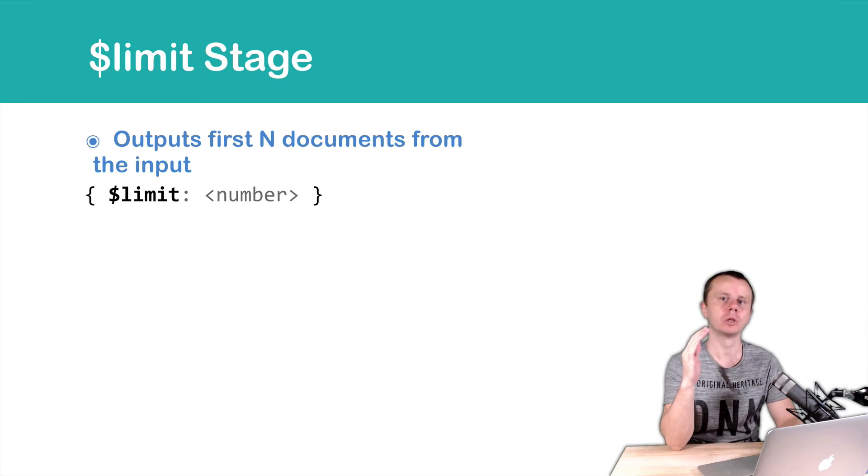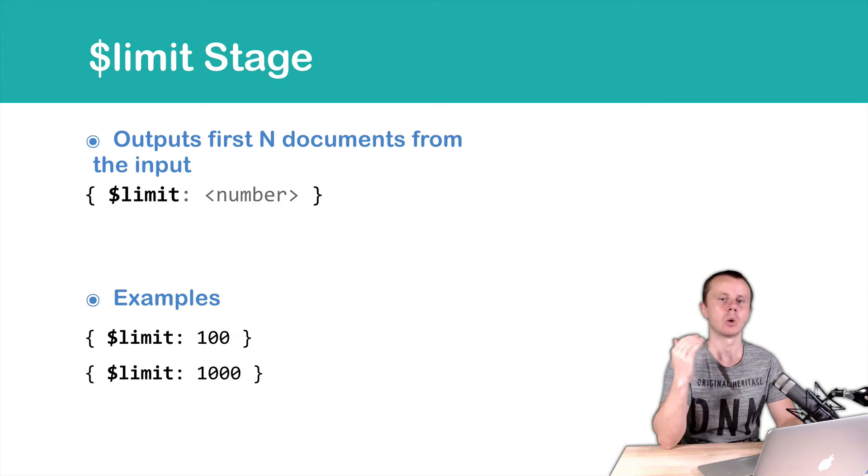This stage will take input documents and output only the first N documents. Let's look at the example: limit 100 or limit 1000.